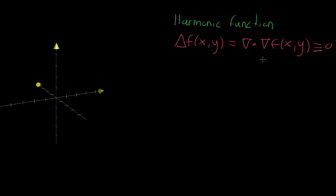To get our head around this, because as you're just starting to learn about the Laplacian, it's hard to immediately see the intuition for what this means. Let's think about what it means for a single variable function. If you have some single variable function of x and you're looking at its second derivative — which is kind of the analog of the Laplacian — what does it mean if that's equal to zero?